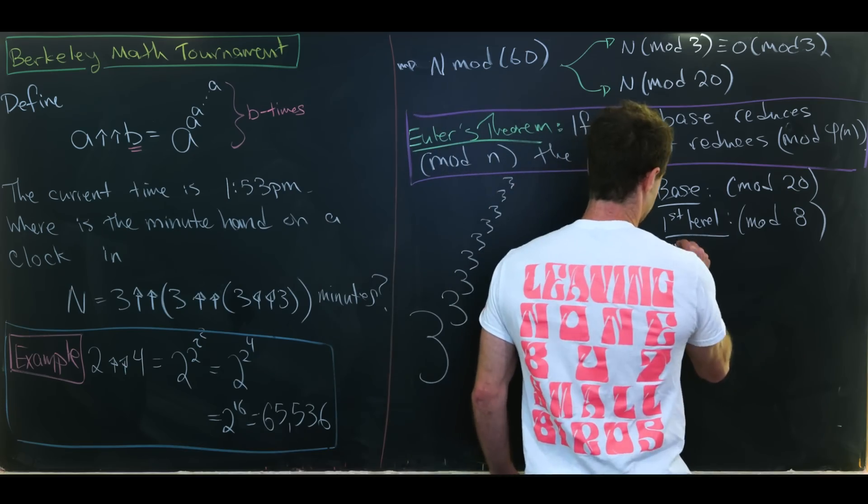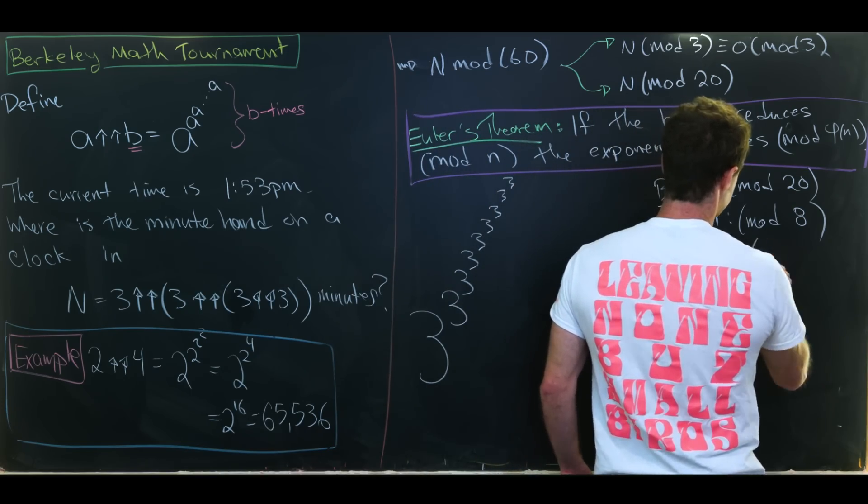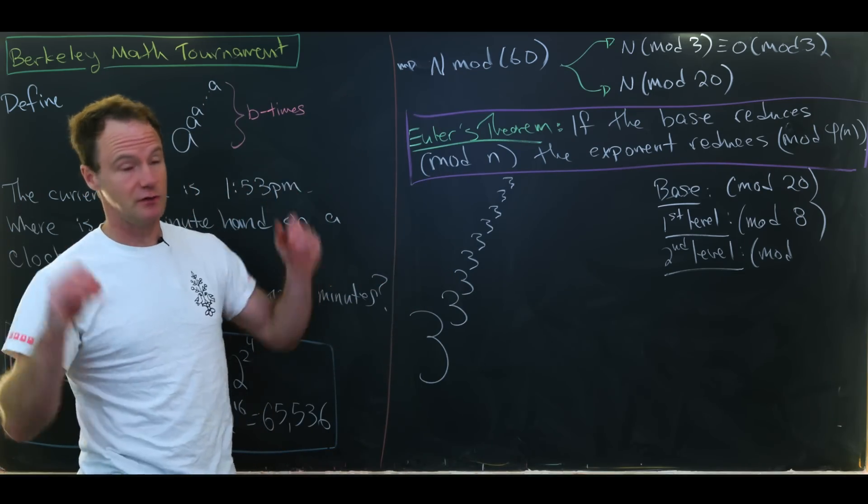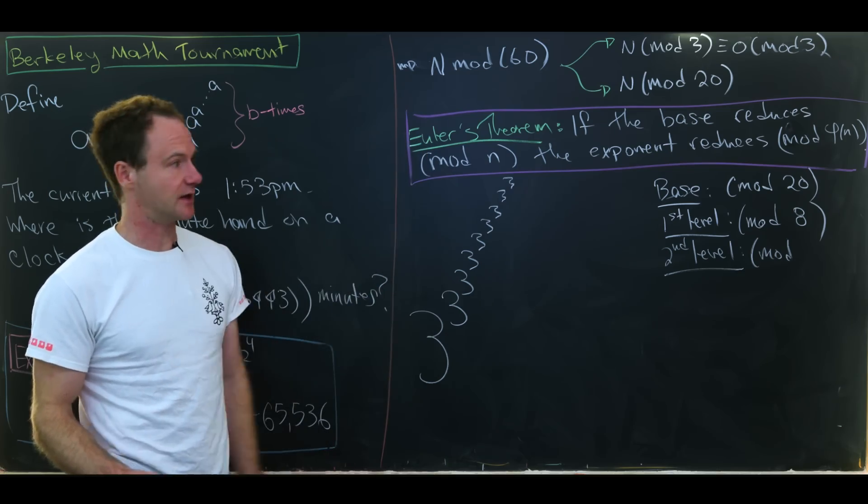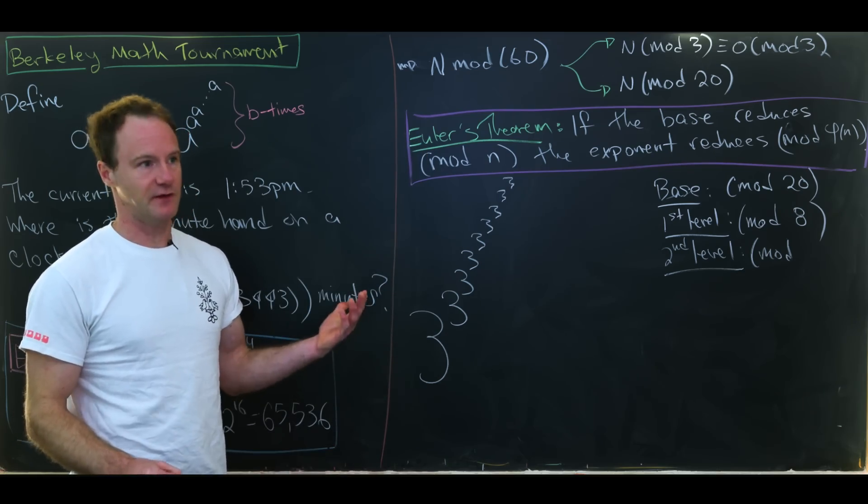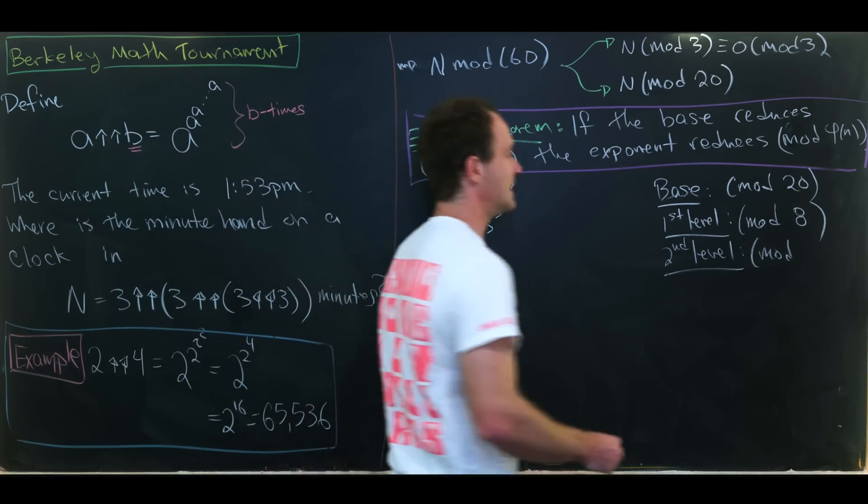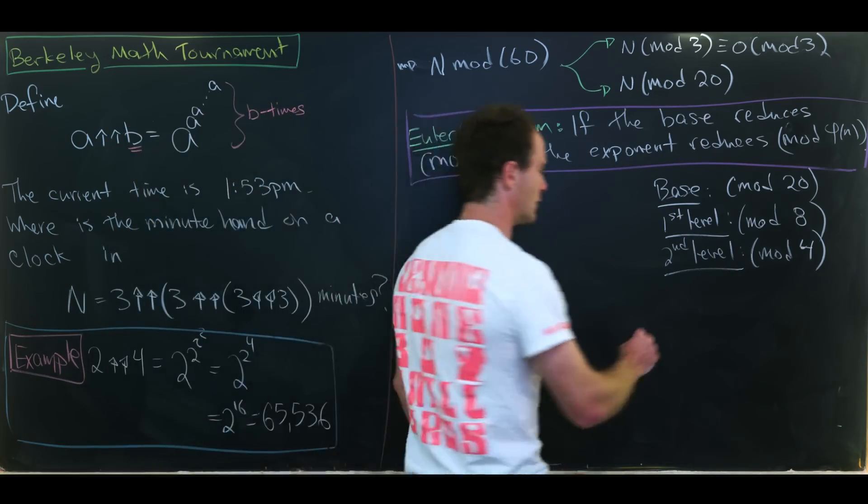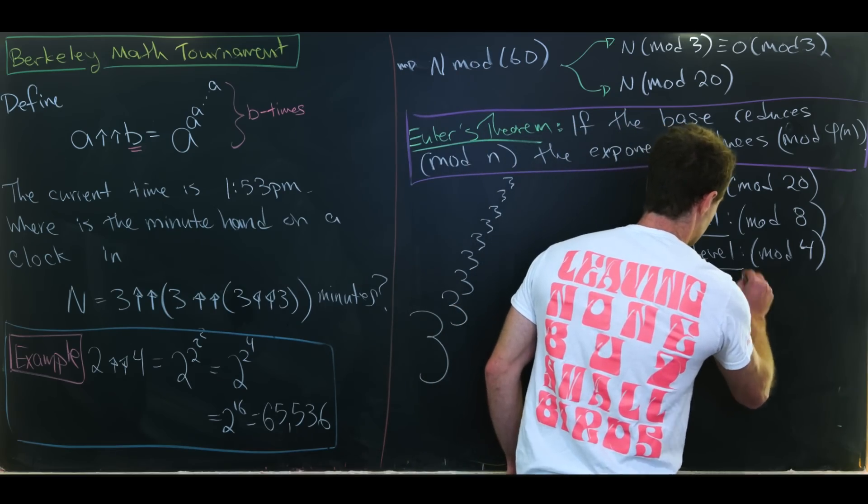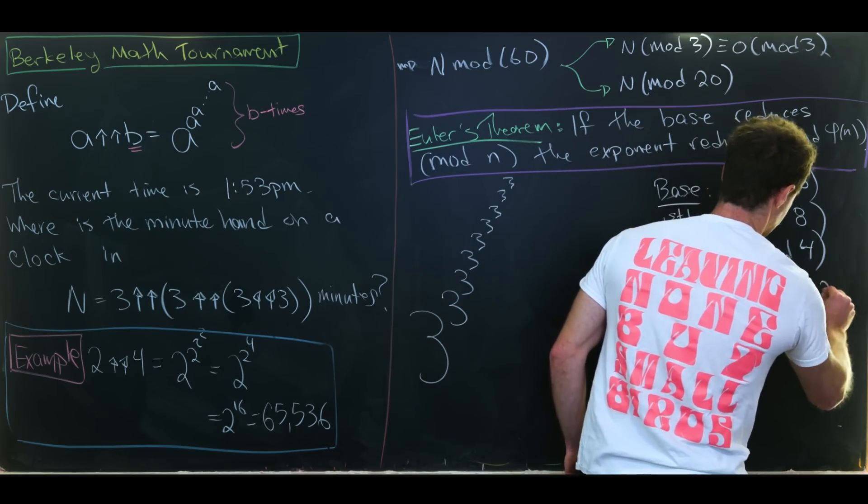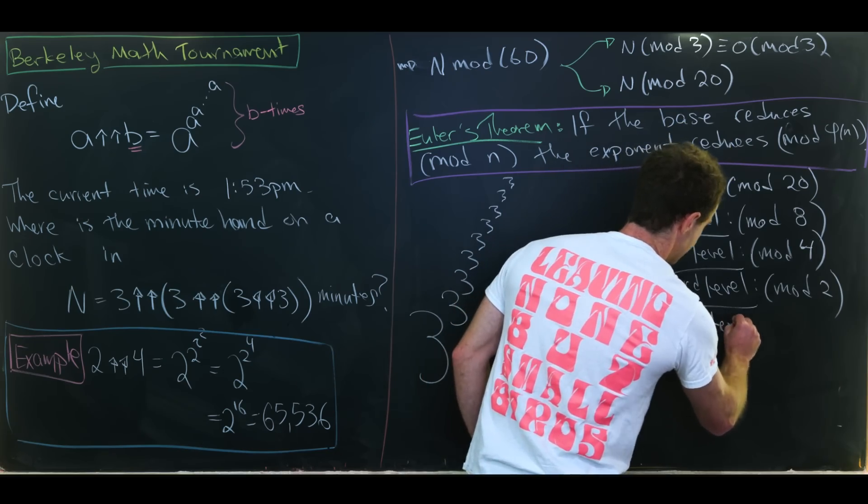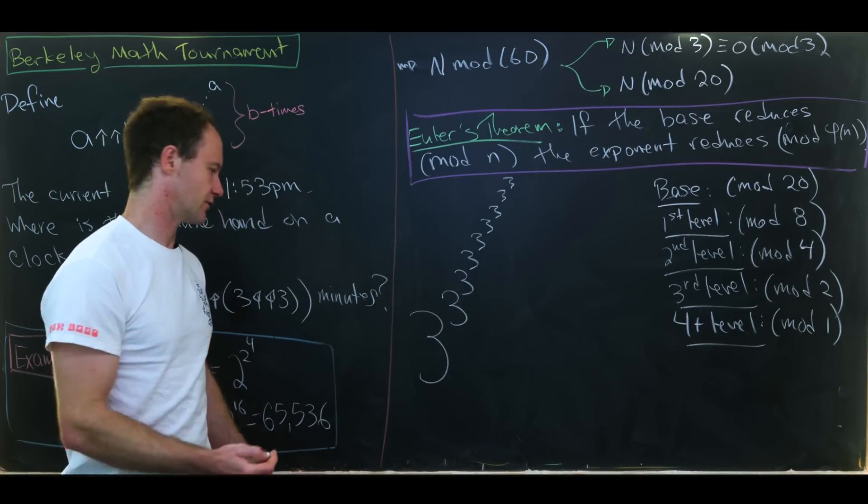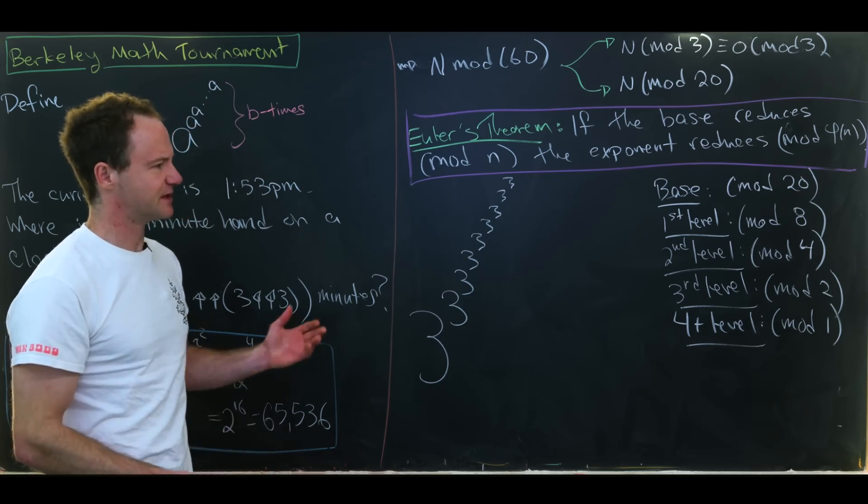Okay, then what about the second level? So this second level will reduce mod φ of 8 because in this second level we're viewing this first level as the new base. So we have to apply Euler's theorem again. What's φ of 8? Well, that's the number of numbers between 1 and 8 that are relatively prime to 8. That is 4, all of the odd numbers in this case. So that second level reduces mod 4. Then what about the third level? So that third level will reduce mod φ of 4 which is 2 and then the 4 plus level, so everything above that will reduce mod φ of 2 which is mod 1. But everything is congruent mod 1.